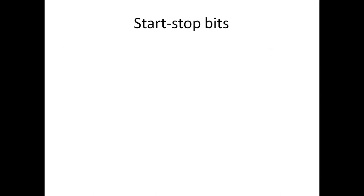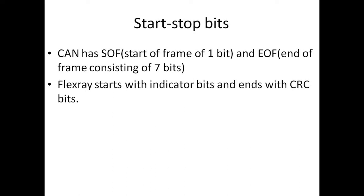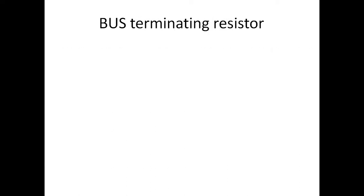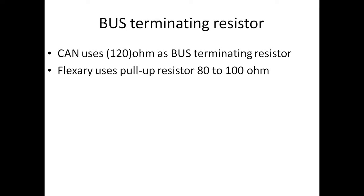What about start and stop bits? CAN uses a start-of-frame and an end-of-frame which consists of 7 recessive bits. FlexRay does not have start-stop bits, but it has indicator bits when it starts the frame. Regarding bus termination resistors, to avoid signal reflections and noise, CAN uses a 120-ohm resistor to terminate the bus at both ends. FlexRay also uses a pull-up resistor of about 80 to 100 ohms as a bus terminating resistor.